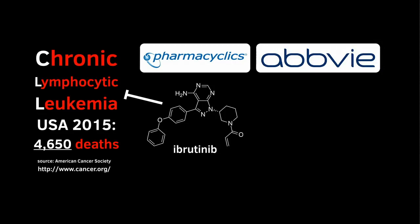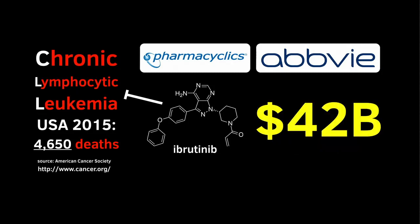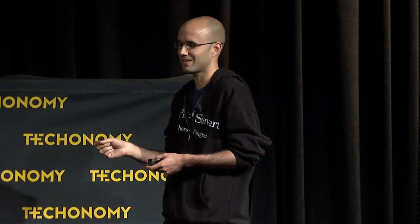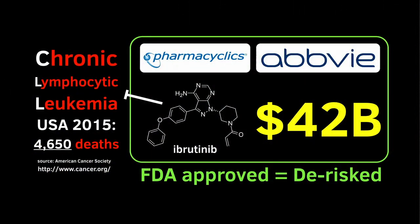AbbVie actually just purchased this molecule for $21 billion. But that's not actually the price of the molecule — that $21 billion is for half the molecule. J&J owns the other half, so the true price is $42 billion. That's how much it costs now to buy a drug that works for some small fraction of leukemia patients. This number is larger than the entire NIH budget by about $10 billion.